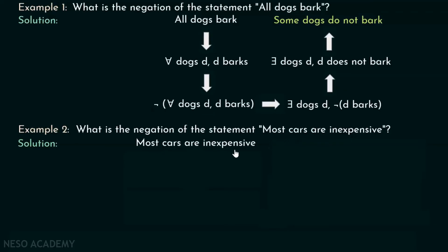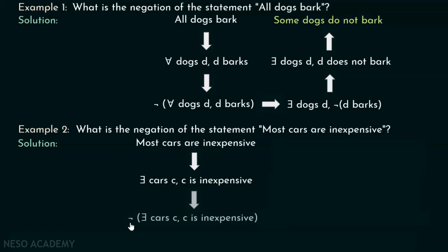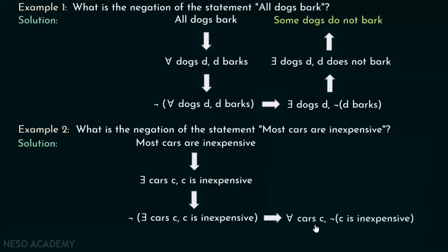We can convert this sentence into the form: 'there exists cars c, c is inexpensive.' Now we put a NOT in front of this statement, so this becomes: NOT there exists cars c, c is inexpensive. When we move this NOT towards the right, this there-exists becomes for-all. So this will be: for all cars c, NOT of c is inexpensive.